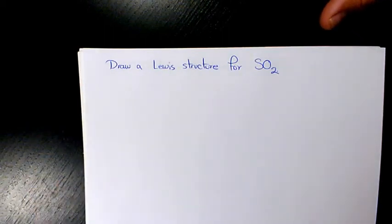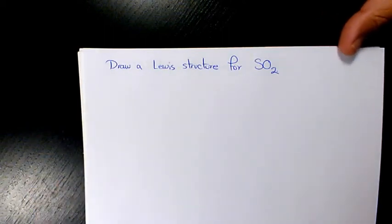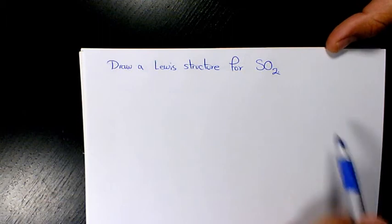What's up guys, this is Massey, welcome to another video. In this video I want to show you how to draw a Lewis structure for SO2 or sulfur dioxide. First thing I need to do is find out the central atom and surrounding atom.